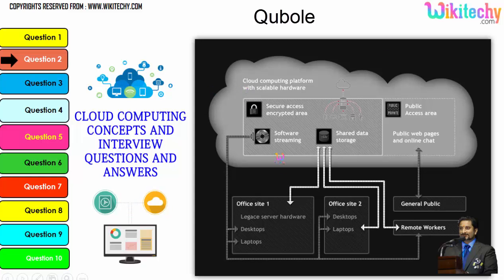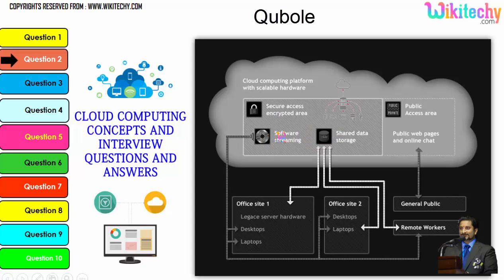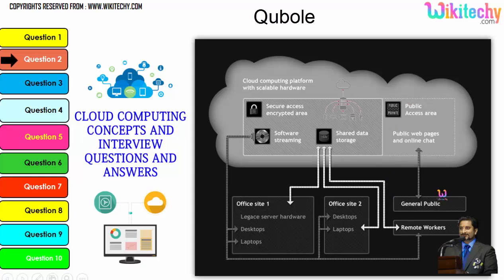Cloud computing has a public access area — public web pages for end users — along with secure data access, shared data storage, and software streaming. Companies can use it as a private kind of resource, and the public can also use it to access web pages or websites. This is how cloud computing works.